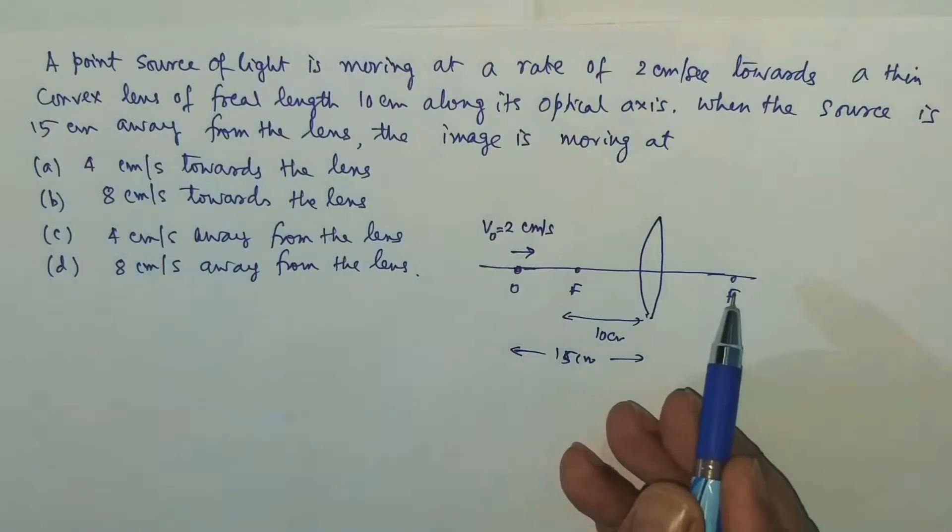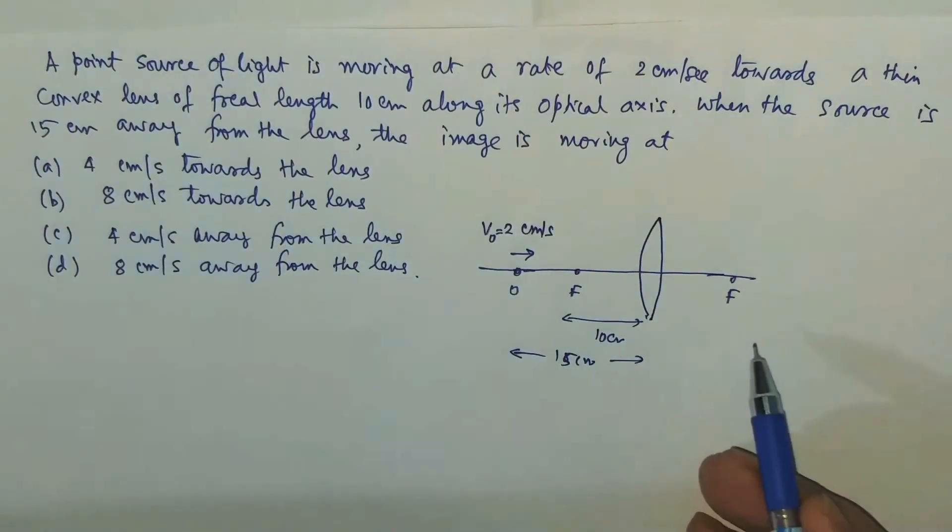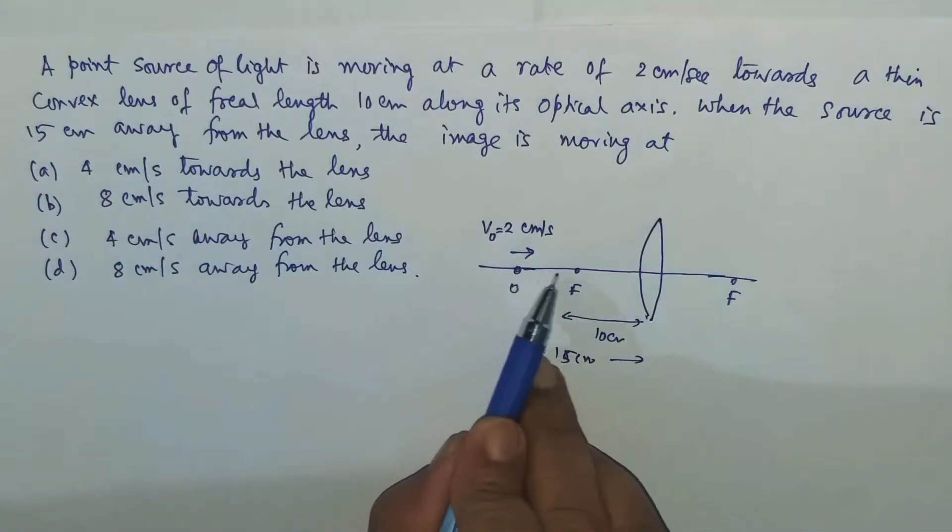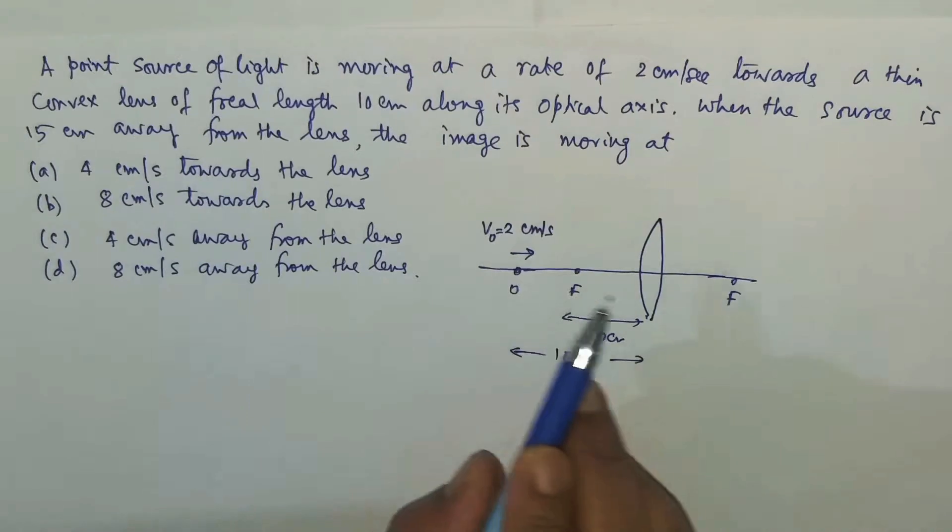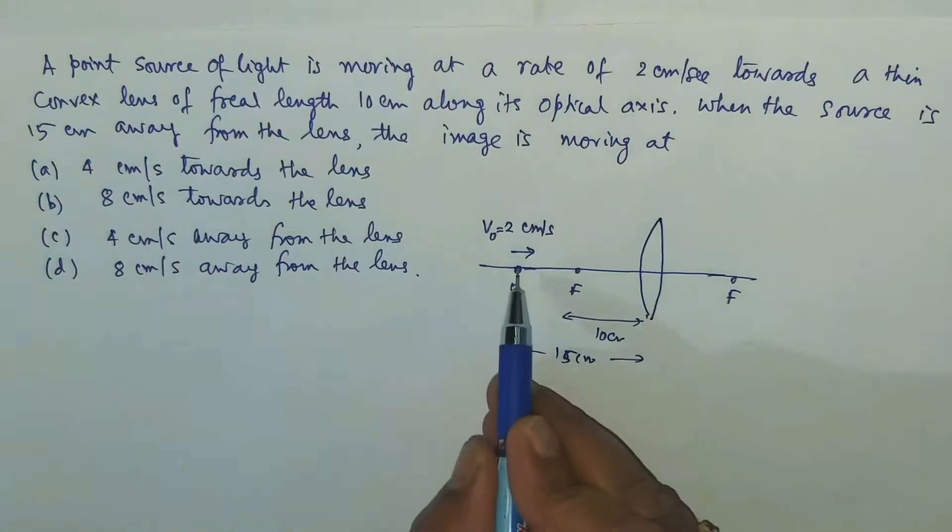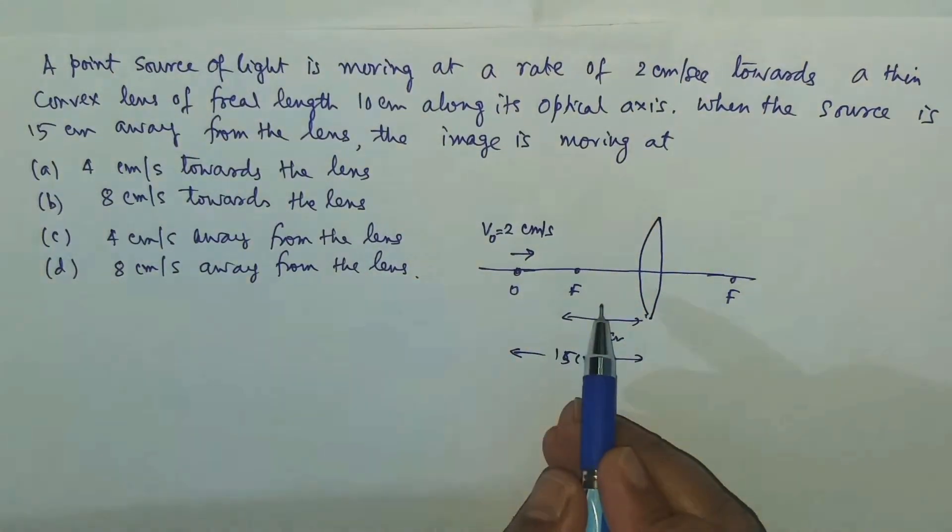So as this object is moving towards this focus, then of course the image will be running away from the lens, is it not? So when the object reaches its focus, the image might have run away and reached up to infinity. So the image will be moving very fast.